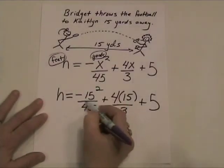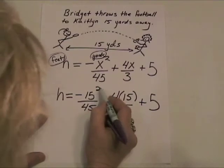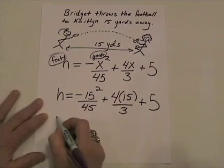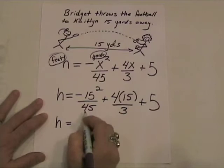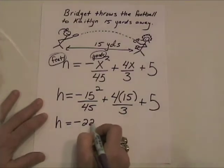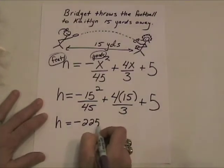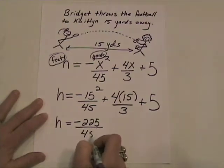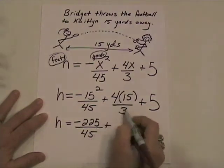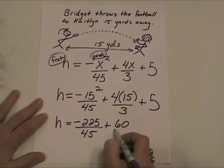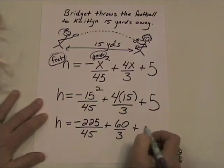Remember, we're going to have to do the squaring first and then take the opposite. So the height in feet is going to be equal to the opposite of 225 over 45, plus 60 over 3, plus 5.